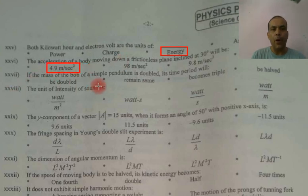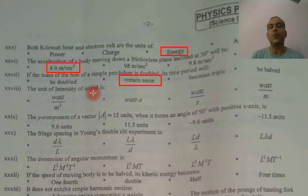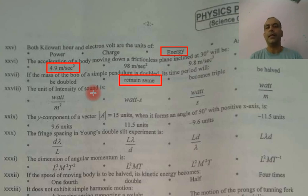If the mass of the bob of a simple pendulum is doubled, there is no relation between mass and time period. So if you increase the mass in a simple pendulum, the time period remains the same. The unit of intensity of sound — if the option gives decibel, many students will choose it. But it is not decibel, because the intensity of sound is not intensity level. Intensity level is measured in decibels.